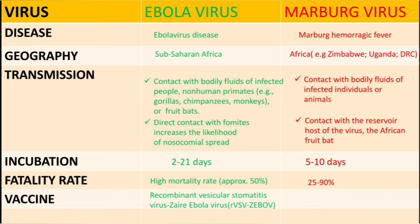As of December 2019, there is a vaccine for the Ebola virus known as the recombinant vesicular stomatitis virus Zaire Ebola virus vaccine. However, for the Marburg virus, we do not have any internationally licensed vaccine.